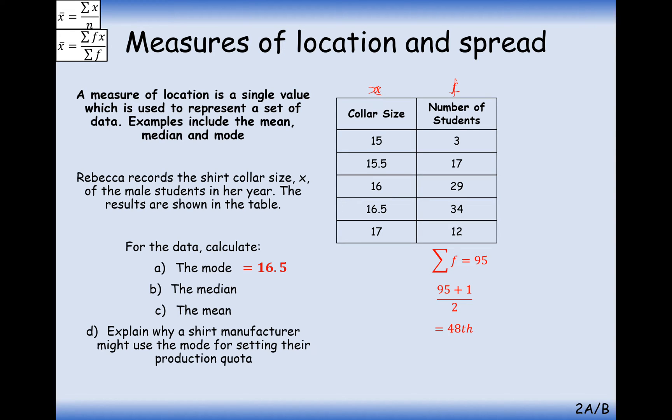So this is going to give us the 48th piece of data. Now what we do is we count down through the groups to find the 48th value, and that will be the collar size. So it might be a little idea to do a little cumulative frequency just in this corner. So 3, we've got 20 values up to here. We've got 49 values up to here. We want the 48th value, so therefore the 48th value must exist in this group here, where the collar size is 16. So our answer here is 16.